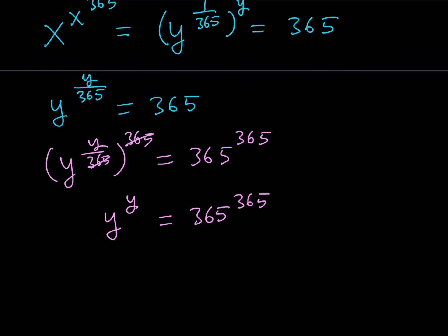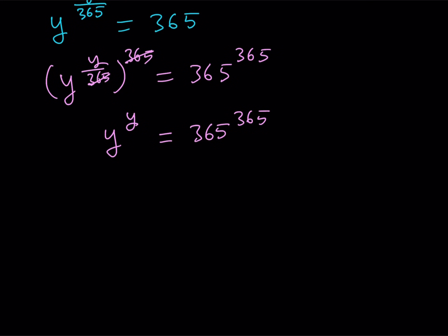Now what is that supposed to mean? Well, if y increases and y is positive, you know that this is going to increase. So y equals 365 is going to be a valid solution. So let's go ahead and write it down. Y is equal to 365.